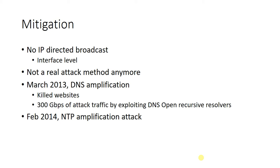That is not the only amplification attack we have seen. In February 2014, there was an NTP amplification attack. The moral of the story is that reflection and amplification attacks are just another type of denial of service attack — another attack vector we need to be aware of. It is one that is difficult to trace back to the real attacker because they are spoofing the source address, and the source address is actually the target of their attack.